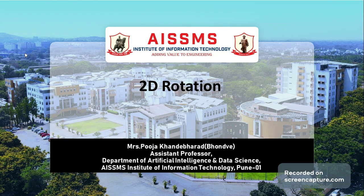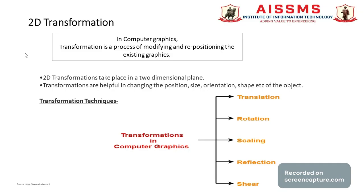Hi everyone, this is an assistant professor of AIS SMS IOIT. In this session we see 2D rotations — that is, the second technique of 2D transformation. 2D transformation is a process of modifying and repositioning existing graphics, and it takes place in a two-dimensional plane, which is why it is called 2D transformation.